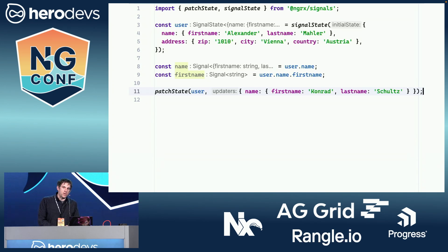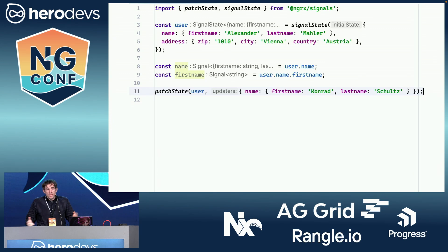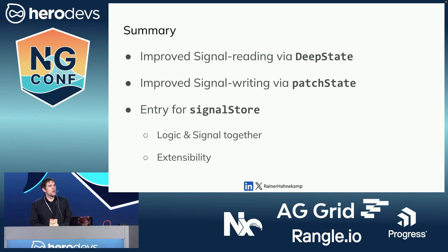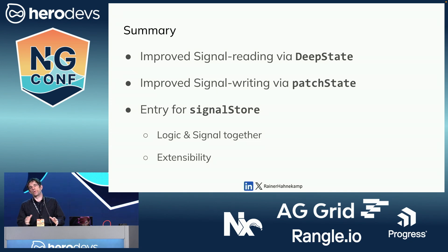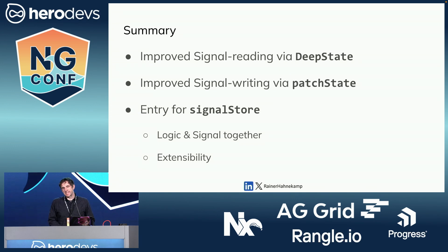Patch state also allows you to provide multiple partial objects, and you can also use update functions — the same kind you'd know from a normal signal. So Signal State gives you better reading and better writing. And if you want my opinion: Signal State is just the beginning, because once you're using it you'll realize there's also a Signal Store, also from the NgRx Signals package, where you can put the signal and all the logic together in one place — and it has great extensibility.